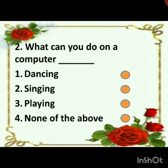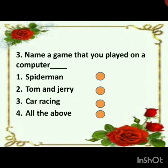Second one: what can you do on a computer? First option is dancing, second one singing, third option playing, and the fourth option none of the above. What can you do on a computer - you have to make the tick mark.